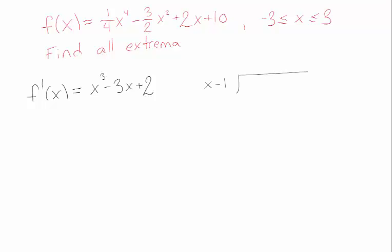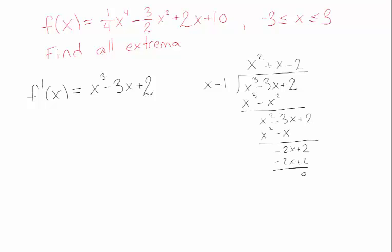If f'(1) is 0, that means x minus 1 is a factor, so we're going to do a little work on the side here to figure out the quadratic factor. If I long divide x minus 1 into my function's derivative, then I find that my function is equal to x minus 1 times my quotient, and now I can factor it more easily.